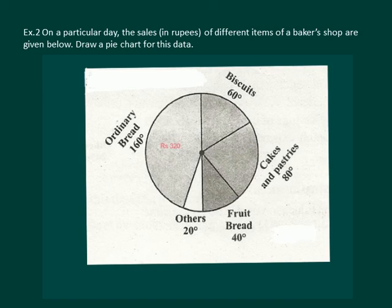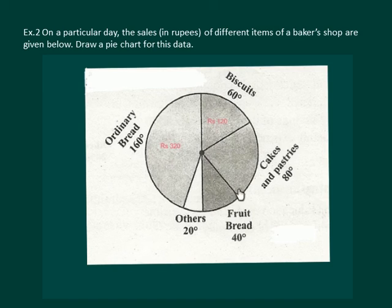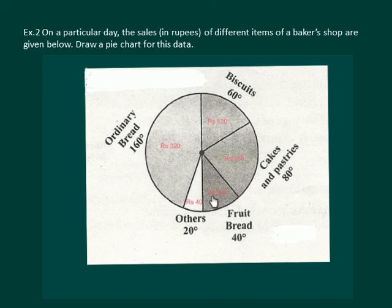Similarly, using a protractor we draw a 60 degree angle, which will represent the biscuits costing Rs. 120. Then we draw an 80 degree angle representing Rs. 160. Then a 40 degree angle representing Rs. 80 for the fruit bread, and a 20 degree angle representing Rs. 40 for the other items sold in the shop.